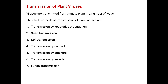Those are the general symptoms by which we can find whether the plant has been infected by a virus. Now we will see the transmission of plant viruses — the modes that transmit viral diseases in plants. Viruses are transmitted from plant to plant in a number of ways.